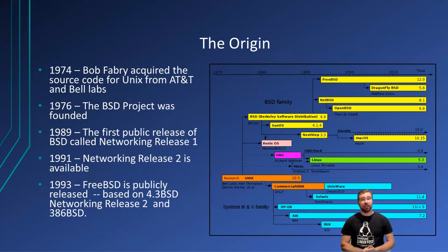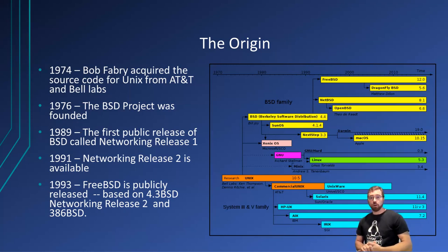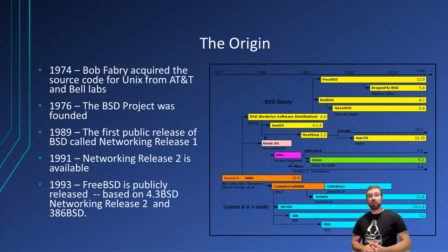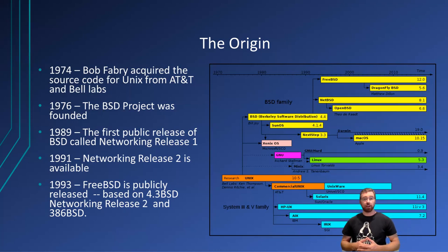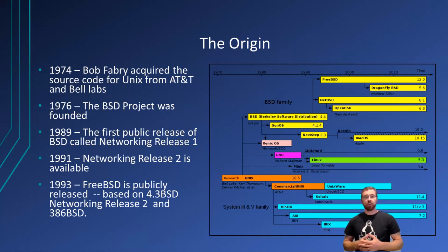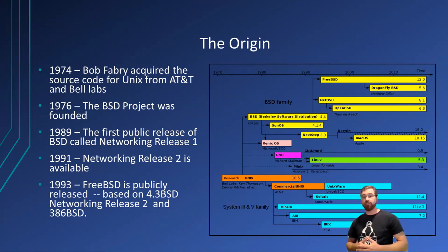The origins of FreeBSD began nearly two decades before its release. In 1974, Bob Fabry acquired the source code for research Unix from AT&T with the assistance of DARPA, which had the intent of advancing the operating system. The modifications are canonically packaged under the names of Berkeley Unix or the Berkeley Software Distribution, or BSD for short. The modifications made during this time include the incorporation of the TCP/IP stack, virtual memory, and the Berkeley Fast File System.